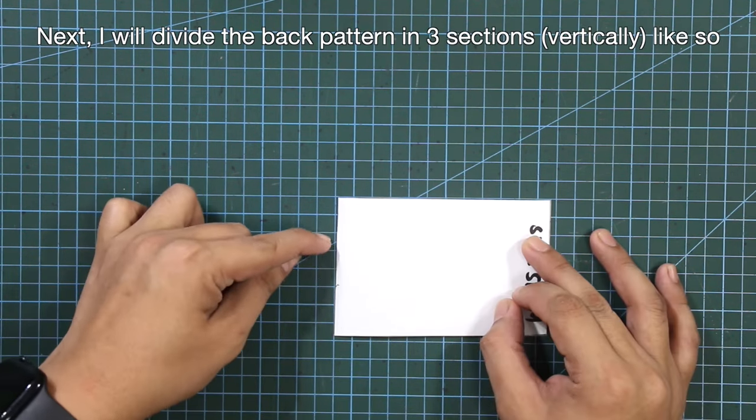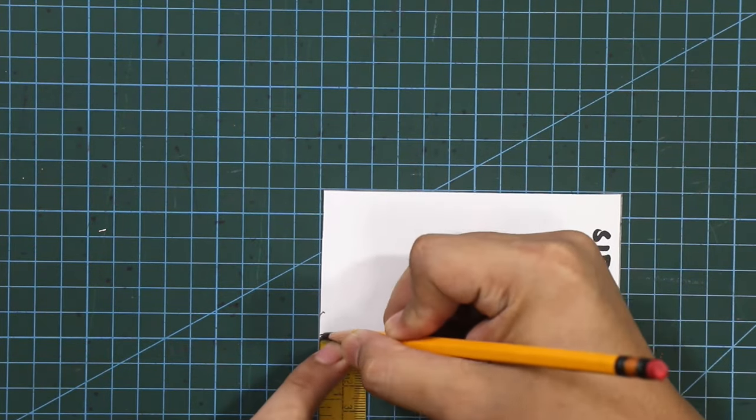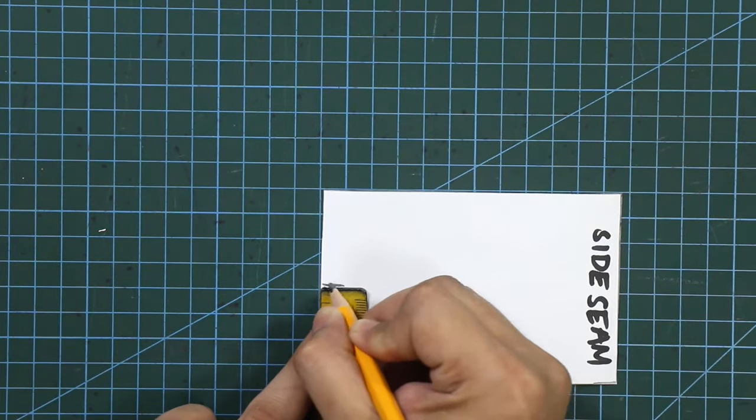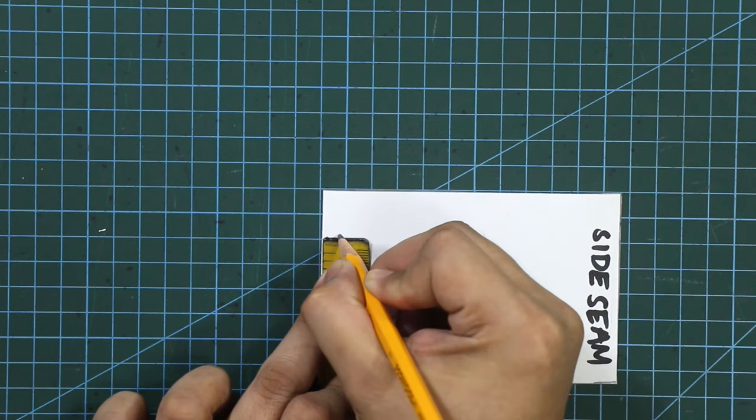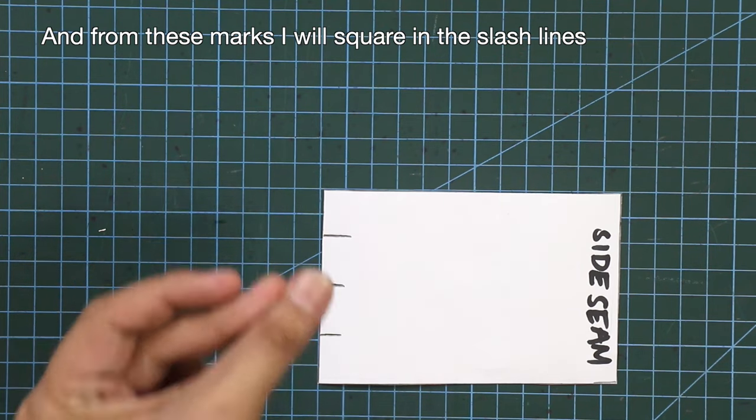Next I will divide the back pattern in three sections vertically like so, and from these marks I will square in the slash lines.